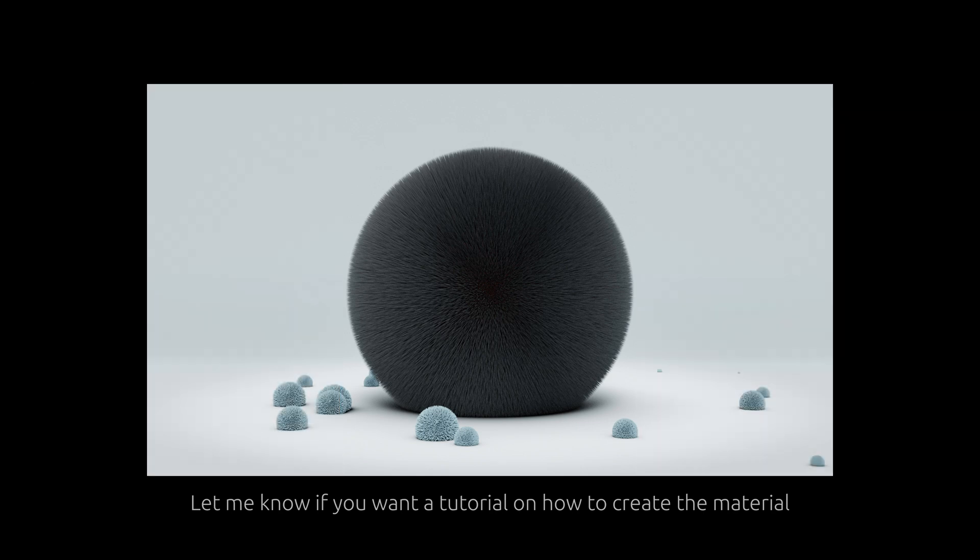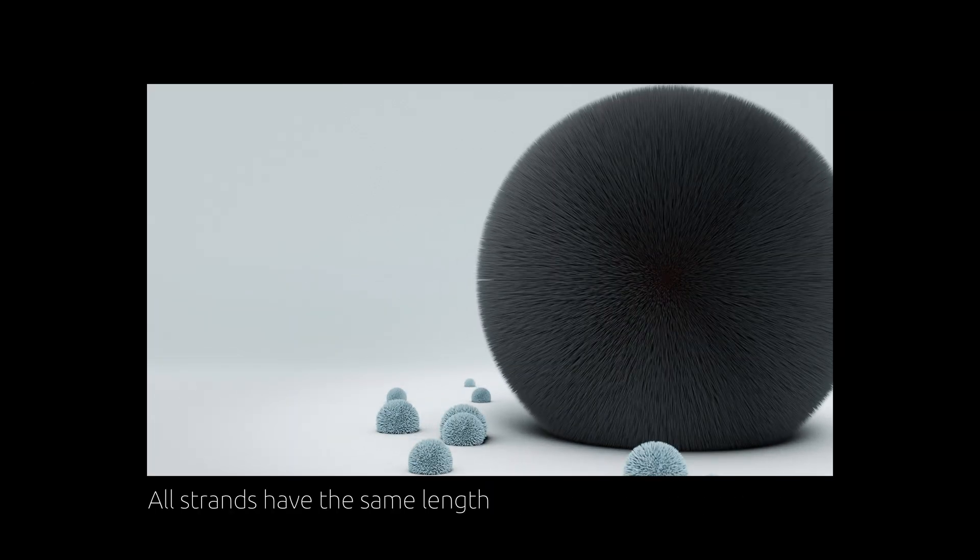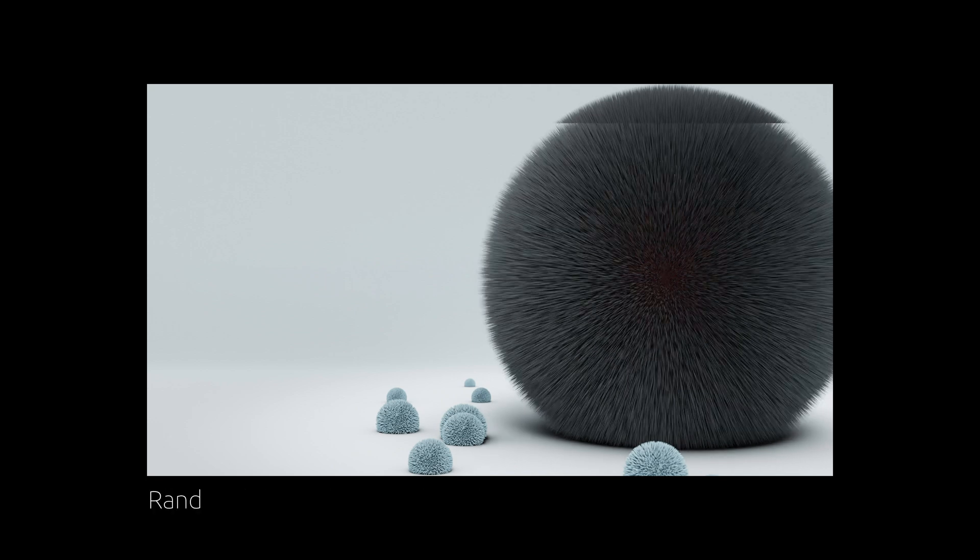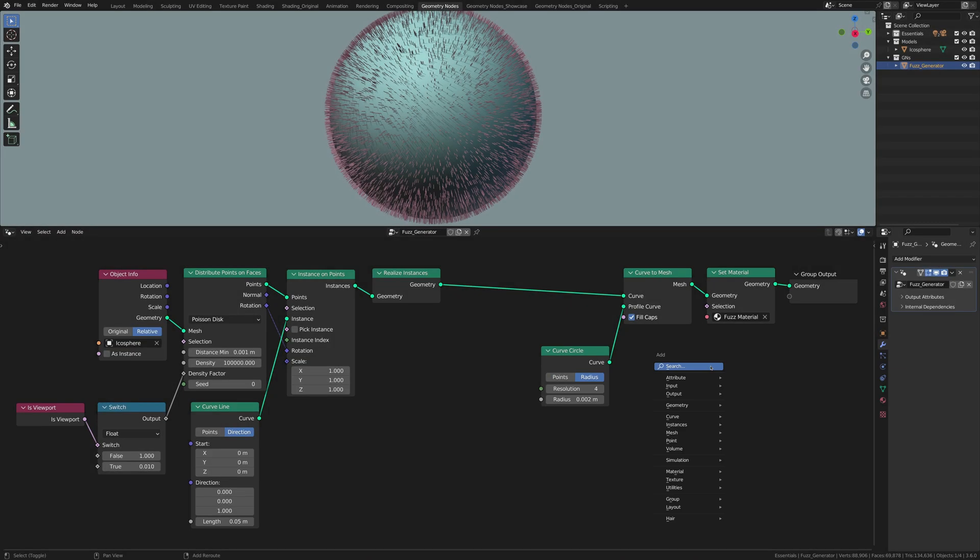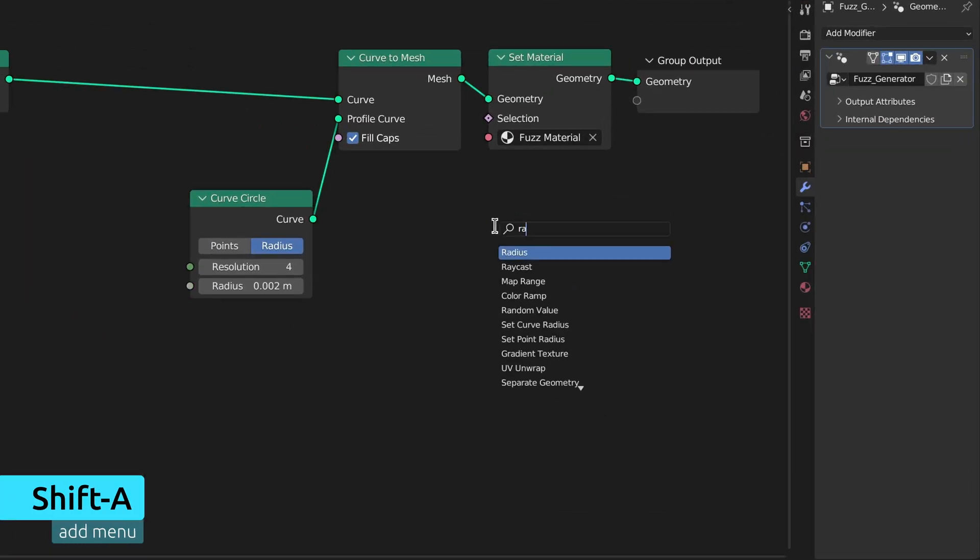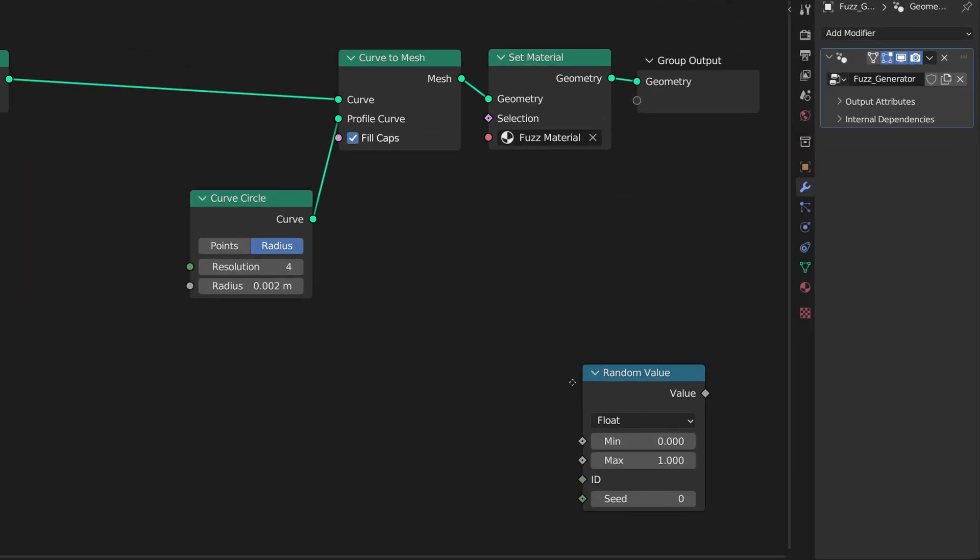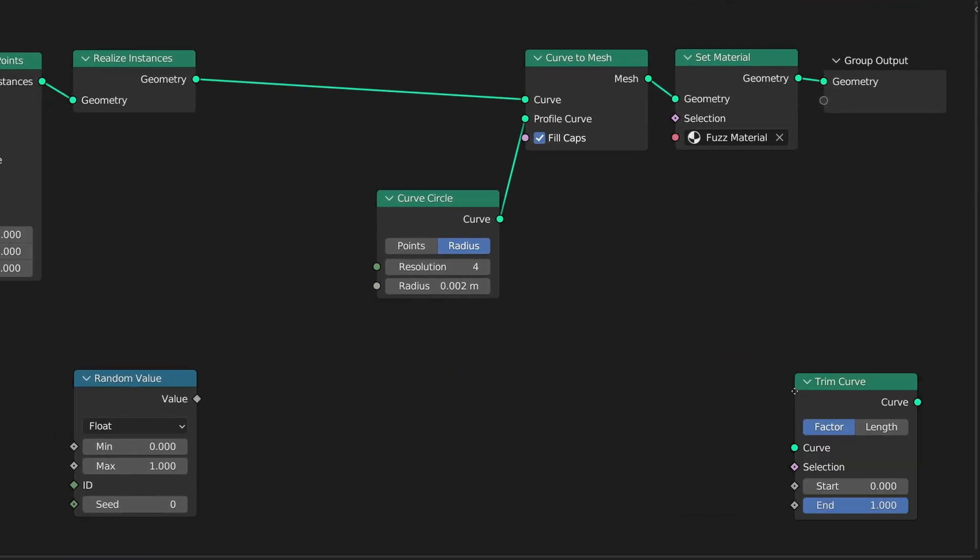But something seems a bit off. The problem right now is that all the strands of our procedurally generated fuzz have the same length, which makes the effect look a bit unnatural. So to fix this, let's randomly trim down some of the strands. And to do this, again, bring up the add menu and use the search field to drop in a random value node and a trim curve node.